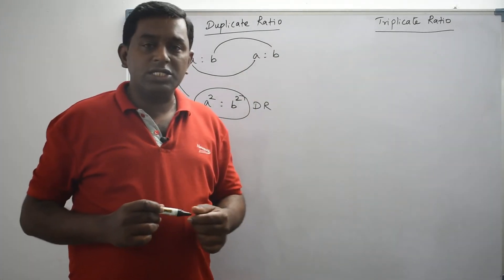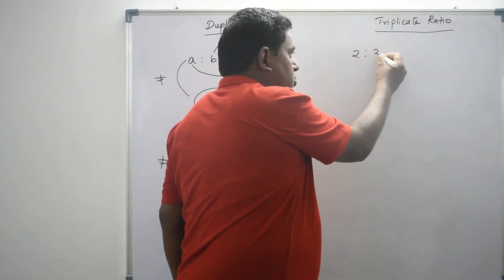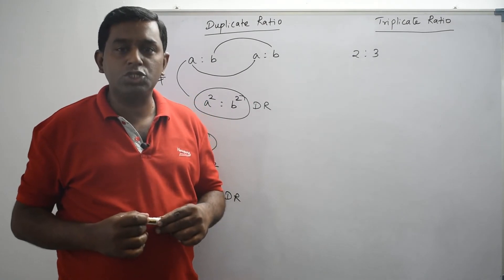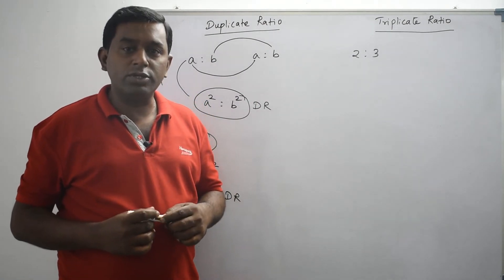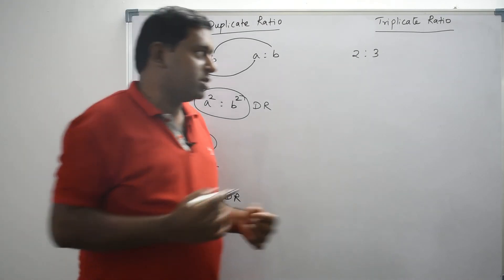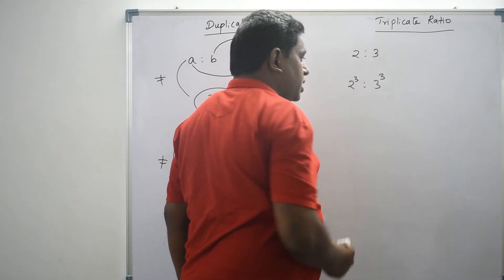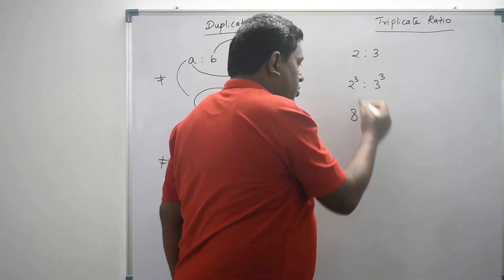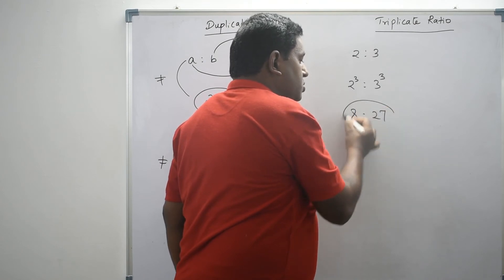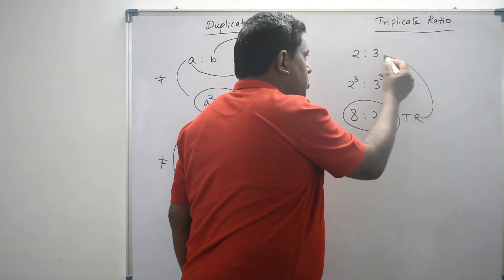Now, let's understand triplicate ratio. Let's consider the ratio 2 is to 3. I want to get the triplicate ratio for 2 is to 3. What I have to do is take the cube of both the first term and second term. That is, 2 cube is to 3 cube. The value of 2 cube is 8, and the value of 3 cube is 27. So, 8 is to 27 is the triplicate ratio of 2 is to 3.